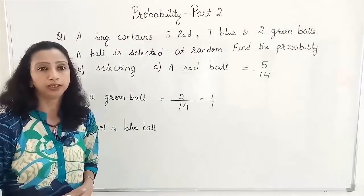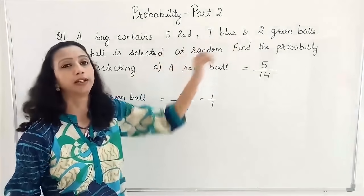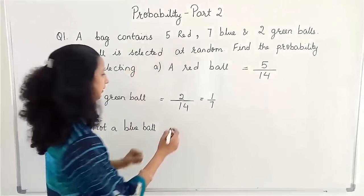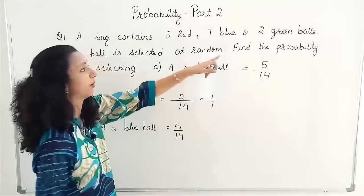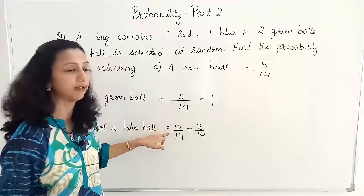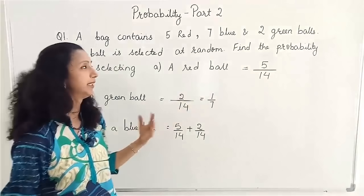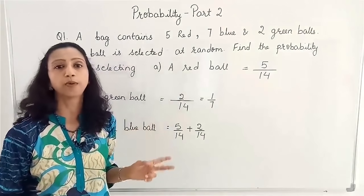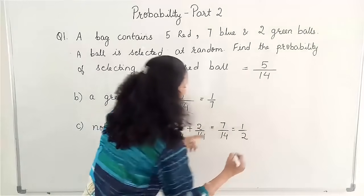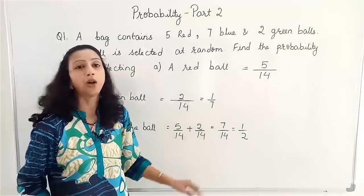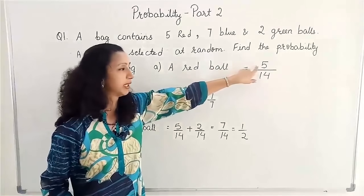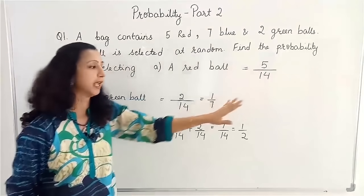The third part is 'not a blue ball', which means it can be either a red or a green ball. The probability of a green ball is 2 by 14, and the probability of red is 5 by 14. Because it is not a blue ball — meaning it is either red or green — these two probabilities are added up, giving 7 by 14, or in lowest terms 1 by 2. This is how we find probability: put the favourable outcomes in the numerator and divide by the total number of outcomes.